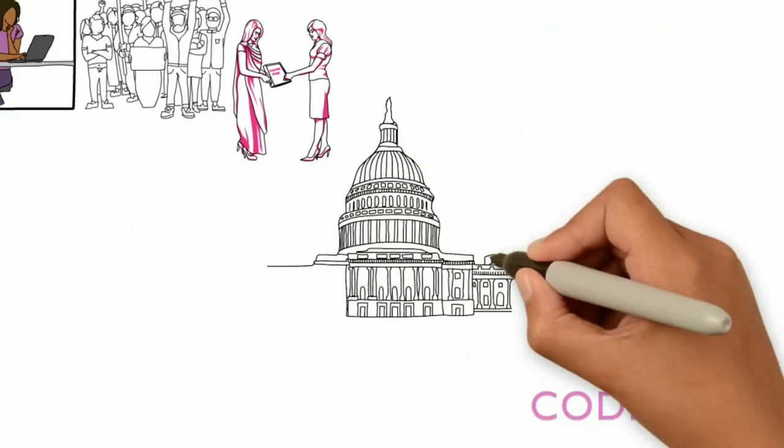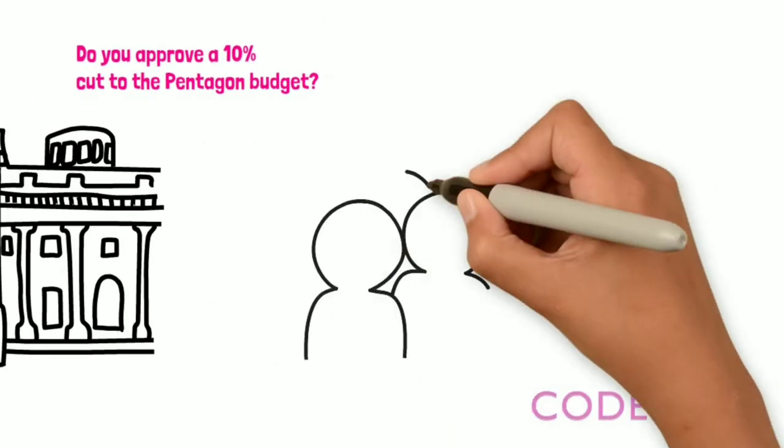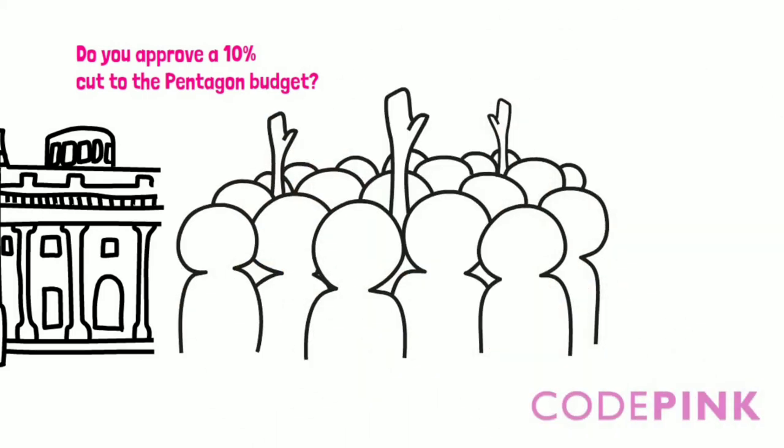This past summer, when our representatives had the opportunity to approve a 10% cut to the Pentagon budget, every single member of Congress who signed the CodePink pledge to divest from war also voted to cut the Pentagon budget.